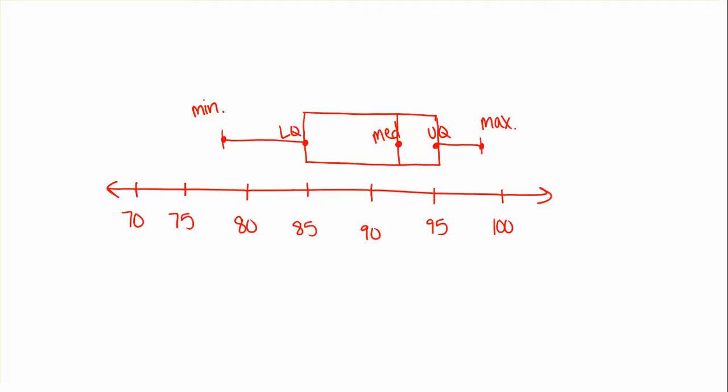If we were to have any outliers — we don't in this case — but if you had an outlier, say way down here at 70, you would use an asterisk to denote the outlier. We'll go ahead and erase that since it's not really there.